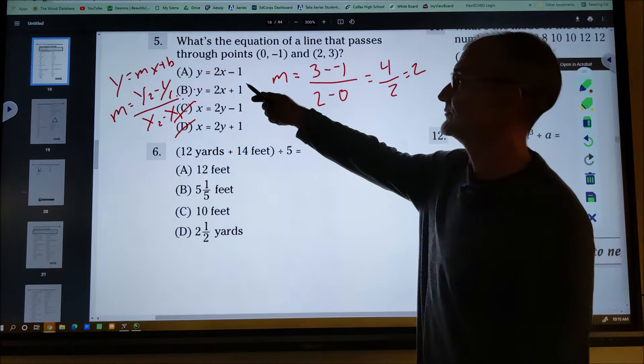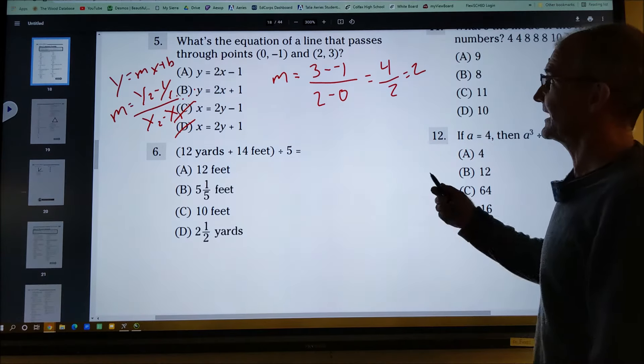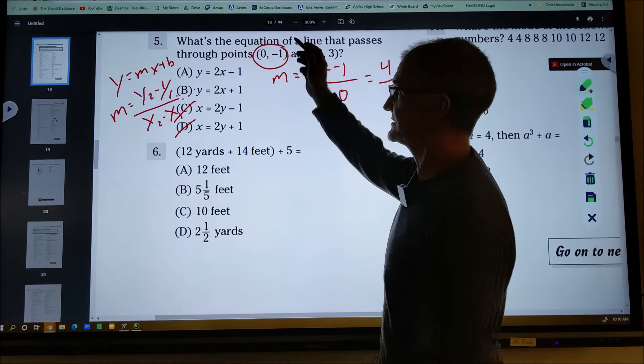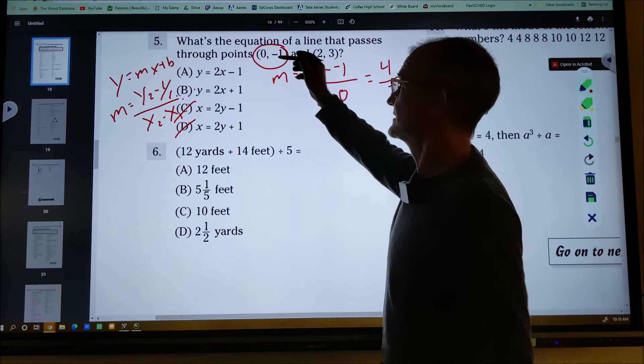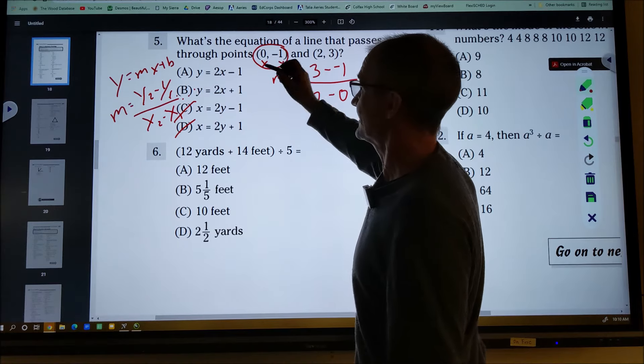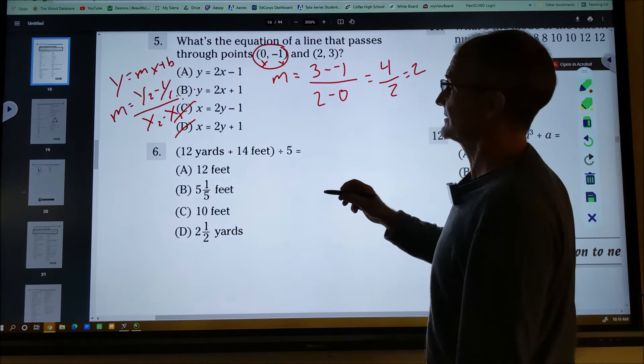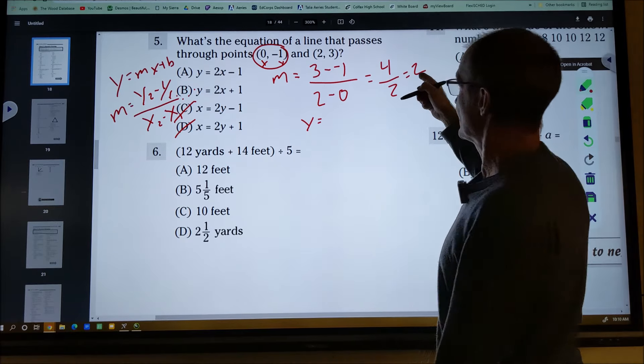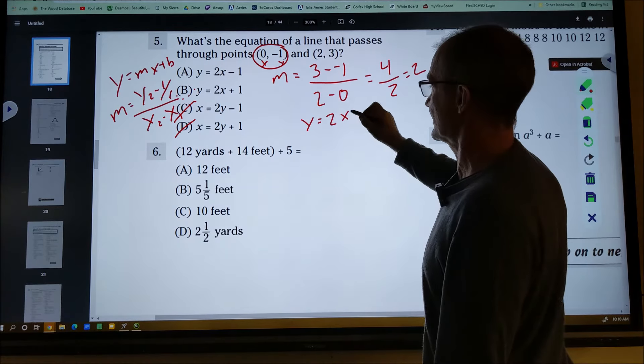So I know it has to be one or the other there. If I have enough time to keep going, then I'm going to just take any point, a point with a zero in it, it'll be much easier. I'm going to take that x and that y and plug it in to solve. So I have y equals mx plus b, but I know m is 2. So y equals 2x plus b.